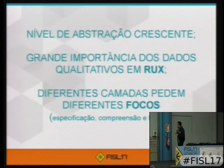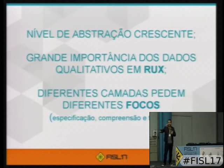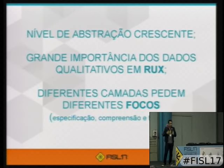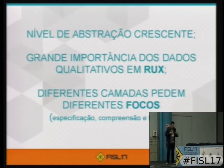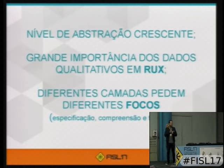É importante também perceber que enquanto a gente vai subindo nessas camadas, o nível de abstração também cresce. Por exemplo: controle de acesso é um requisito funcional; segurança é um requisito de qualidade; e que o usuário se sinta seguro para acessar aquele ambiente é o requisito de experiência. Percebe como a abstração vai crescendo? Às vezes algumas equipes estão em conflito porque a questão do olhar na abstração às vezes é perdida.